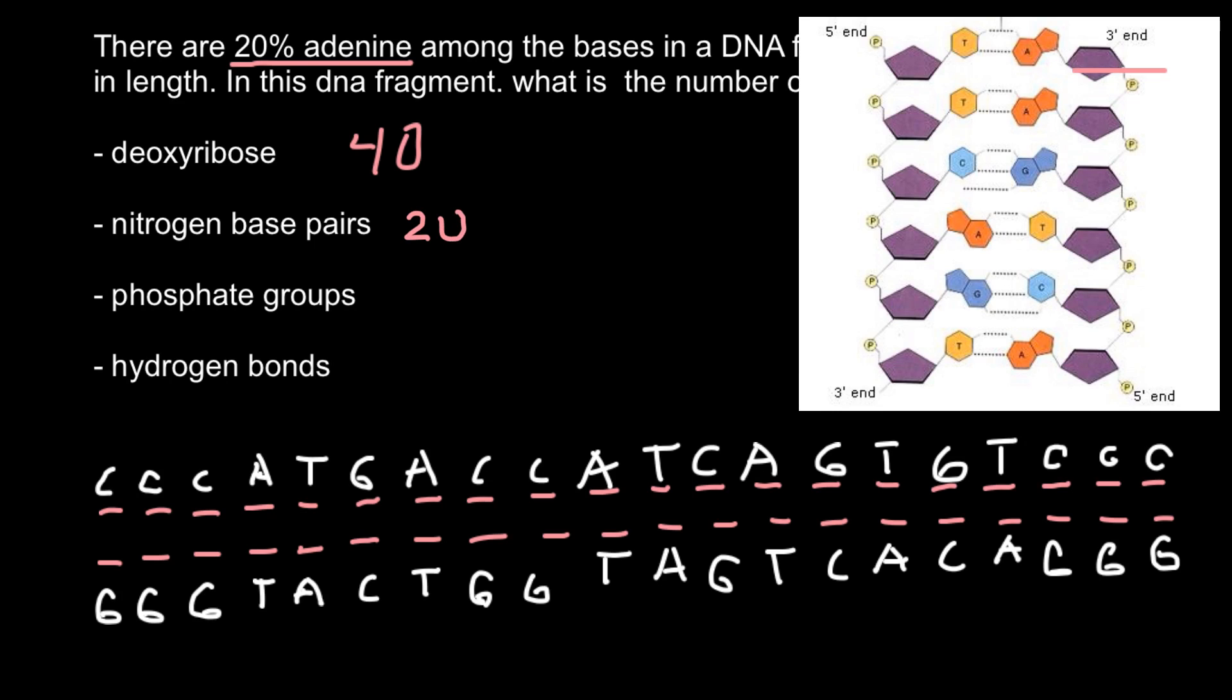And next question a little bit tricky, how many phosphate groups we have here? As you see on this picture, two adjacent bases connected through deoxyribose and through phosphodiester bond. So let's put all these bonds here. So 1, 2, 3, 4, 5, 6, 7, 8, 9, 10, 11, 12, 13, 14, 15, 16, 17, 18, and 19.